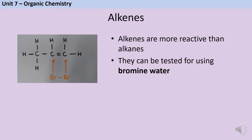Alkenes are more reactive molecules than alkanes. We can differentiate between the two types of molecules using a test called the bromine water test. Bromine water is able to identify the presence of double bonds, and since this is the only difference between an alkene and an alkane, it allows us to work out which is which.